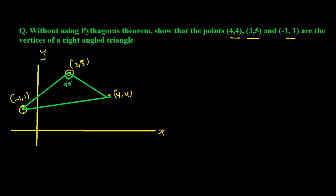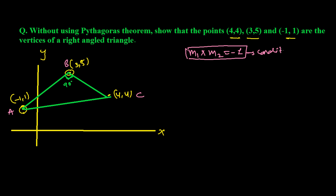We have three lines. Let's name them: this is A, this is B, this is C. So we have line AB, line BC, and line AC. We need to solve this with the help of slope. We learned that if two lines are perpendicular, the product of their slopes is always -1. This is the condition for perpendicularity.